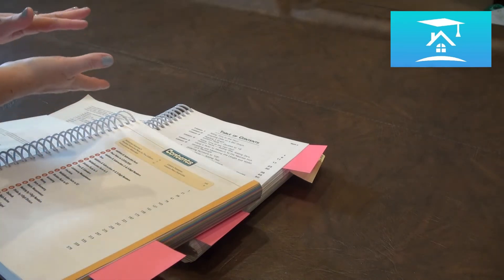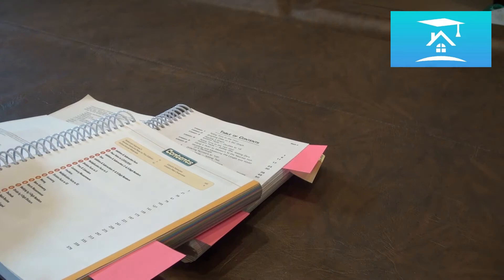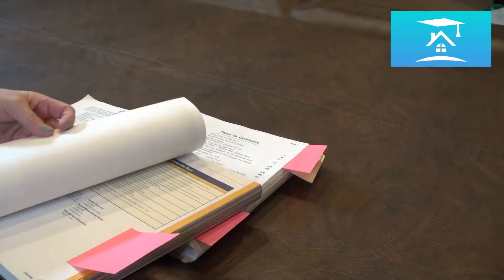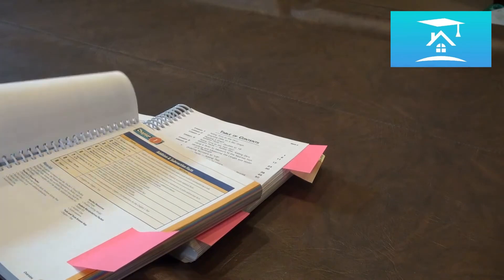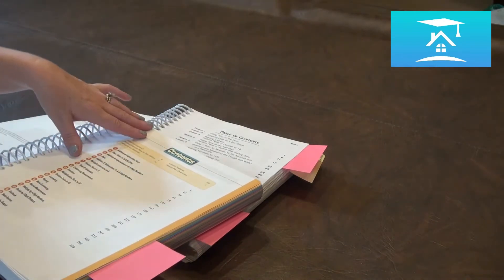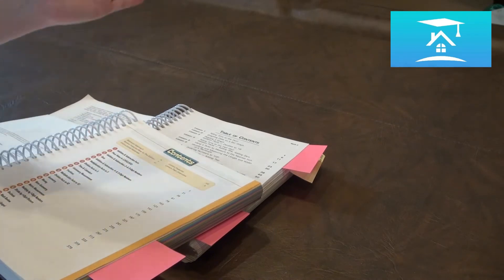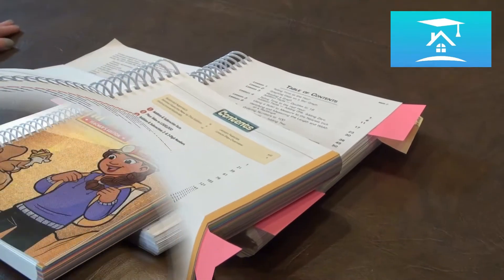Saxon does come back to those different subjects, but they seem to switch from one day to the next to the next. Whereas it looks like in BJU, you at least have a chapter to cover the material, and then you do a review, take your test. And if you need more review, you can do more, and then you move on to the next chapter.